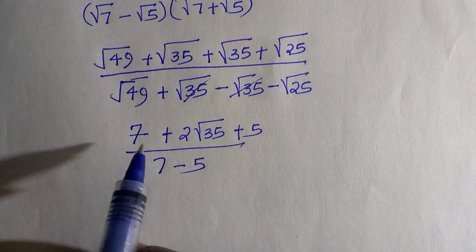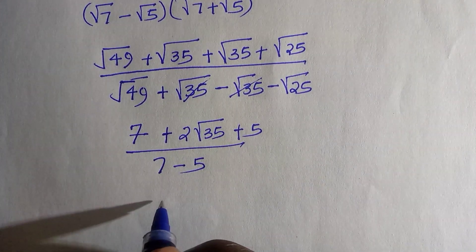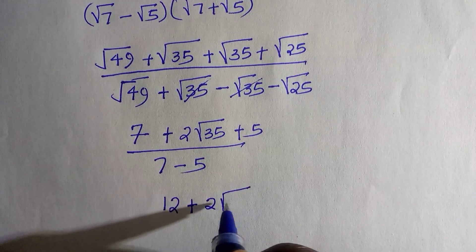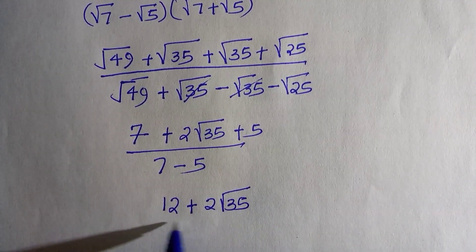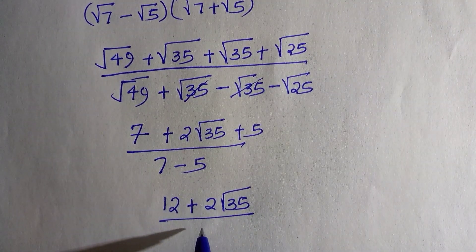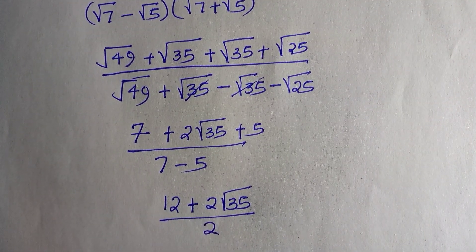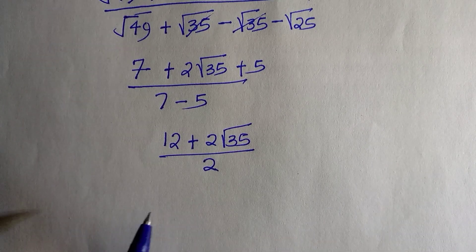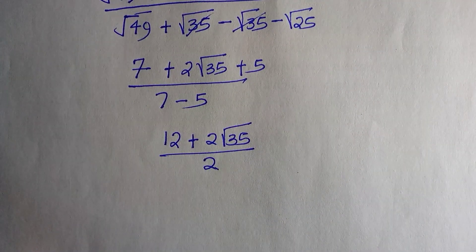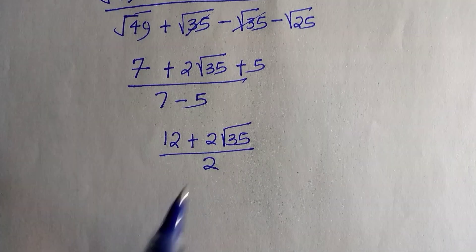Those that are perfect squares: √49 is 7 and √25 is 5. Those in roots remain irrational. We have 7 + 5 + 2√35 divided by 7 - 5. By subtracting in the denominator, we have 2.